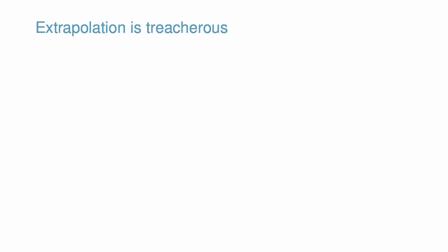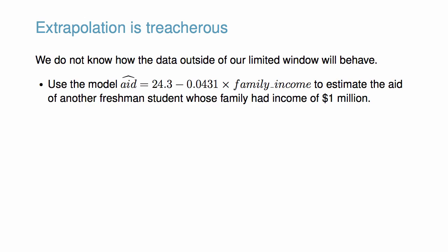Linear models can be used to approximate the relationship between two variables. However, these models have real limitations. Linear regression is a modeling framework. The truth is almost always much more complex than our simple line. For example, we do not know how the data outside of our limited window will behave.